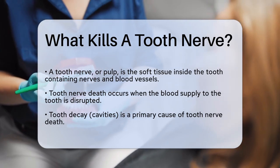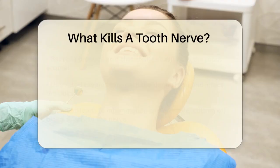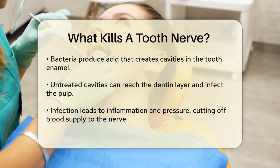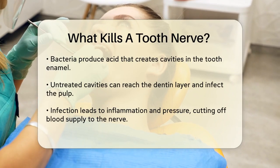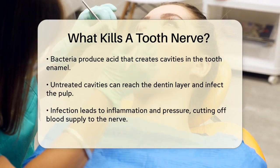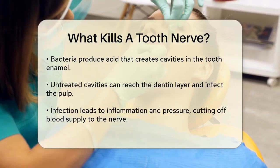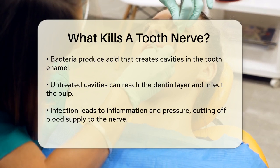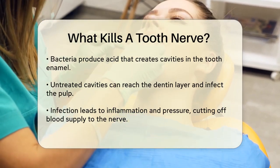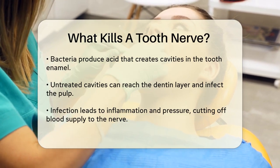One of the primary causes is tooth decay, also known as a cavity. When bacteria in your mouth produce acid, it can create a cavity in the enamel of your tooth. If this cavity isn't treated, it can deepen and reach the softer dentin layer and eventually the pulp, where the nerve lives. Once the bacteria infect the pulp, it causes inflammation and pressure, cutting off the blood supply to the nerve and other parts of the tooth. This can lead to intense pain and ultimately kill the tooth nerve.